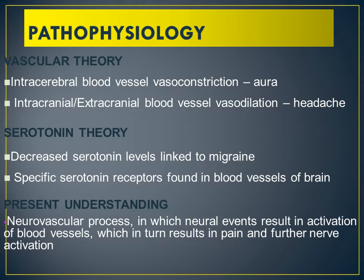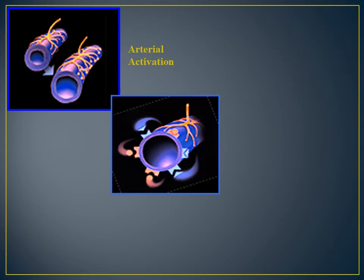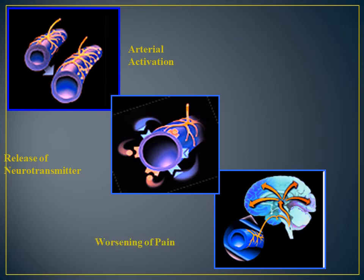The current understanding is that migraine is basically a neurovascular process in which neural events result in activation of blood vessels, which in turn results in pain and further nerve activation. So the pathophysiology involves arterial activation of blood vessels, release of neurotransmitters, and worsening of pain.